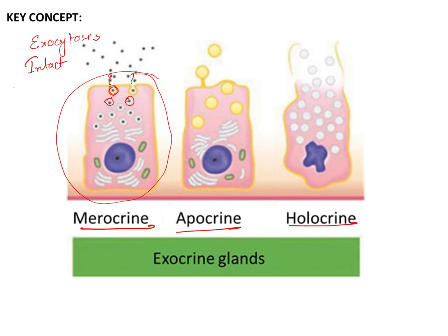Examples of merocrine secretion include the sweat glands and the salivary glands. These two are very important examples for the exam.